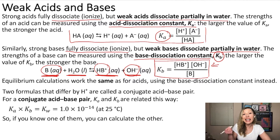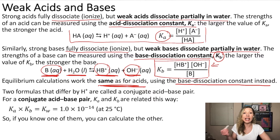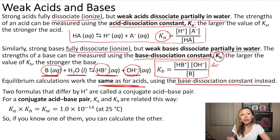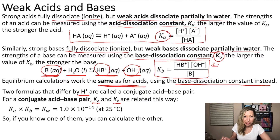What's great is that the equilibrium calculations work exactly the same way as for acids — we just use the base dissociation constant instead of the acid dissociation constant. We also learned about conjugate acid-base pairs, which are simply formulas that differ by an H plus. And if you know K sub A, you can calculate K sub B, because there is a relationship between them.